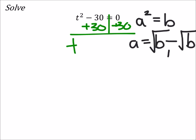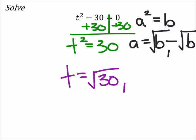So now we have t squared equals a positive 30. And then, if we were to square root both sides, then we would have just a t, and we have the positive square root of 30, and the negative square root of 30, that is t.